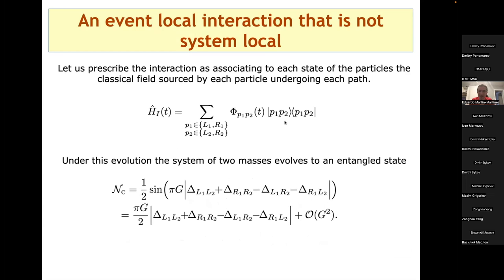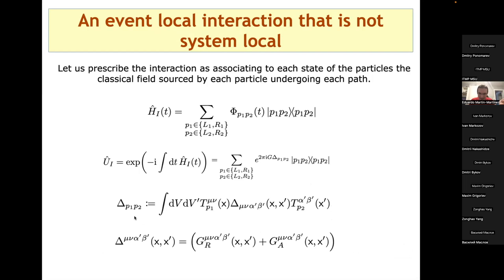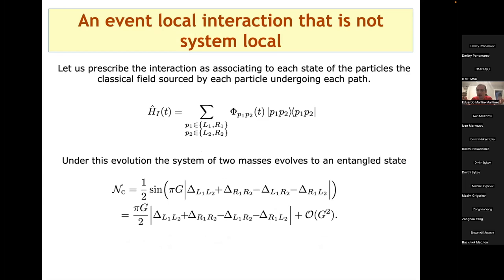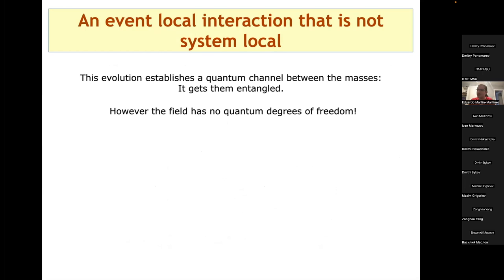Under this QC model evolution, the two-mass system evolves to an entangled state. The entanglement measure (negativity) is a function of the stationary densities of each mass on each path, contracted with the radiation propagator — the retarded plus advanced propagator. This is purely classical linear field theory, yet the masses do get entangled, consistent with what the Newtonian potential already predicted.